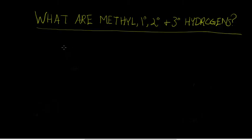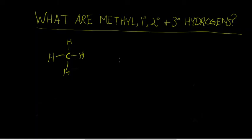I'm going to illustrate this via example, so let's look at methane here — CH4. All the hydrogens here are attached to a carbon that's only attached to hydrogens. This carbon atom in methane is not attached to any other carbon atom, so we call these methyl hydrogens.